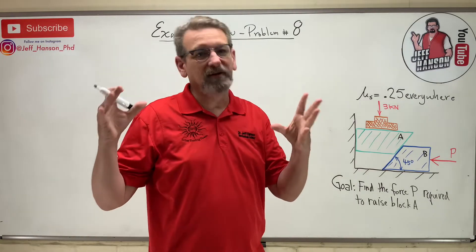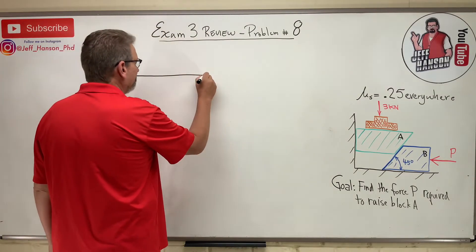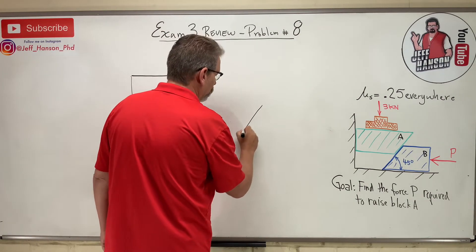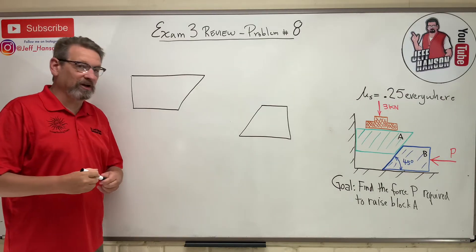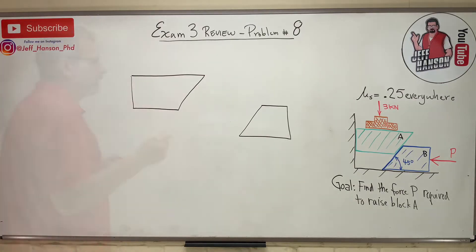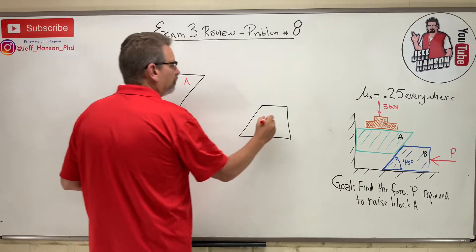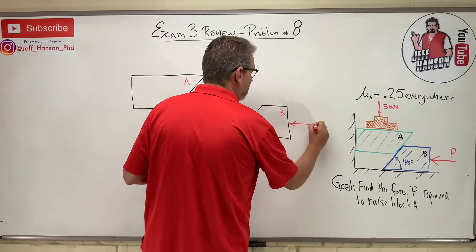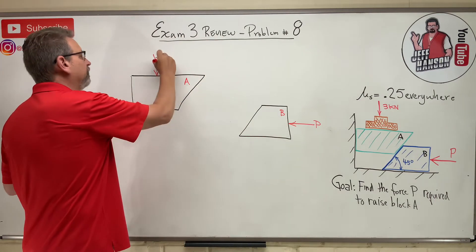Step one for these problems: draw free body diagrams. So here we go, two free bodies - here's number one and here's number two. This is the point in the video where I want you to push pause and draw these along with me. Alright - here's block A, here's block B. Block B has a force P and a weight shown as a force of 3 kilonewtons.